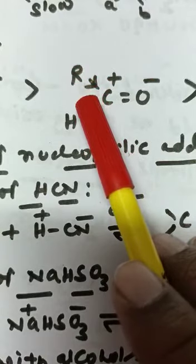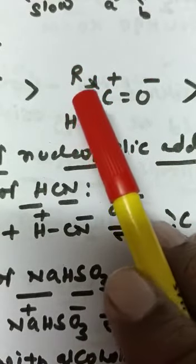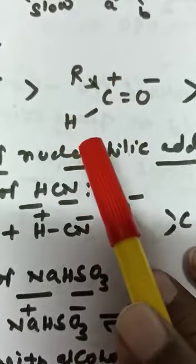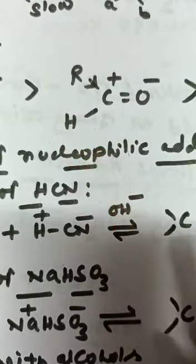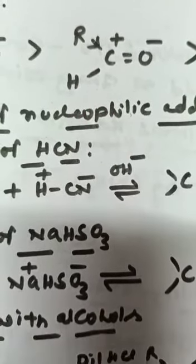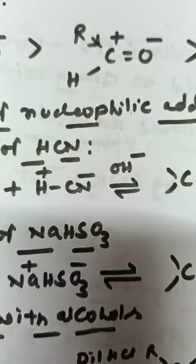In case of aldehyde, only one alkyl group is present. So, steric hindrance is minimum or less. So, incoming nucleophile space is greater in aldehyde. That's why ketones are less reactive than aldehyde toward nucleophilic addition reaction.